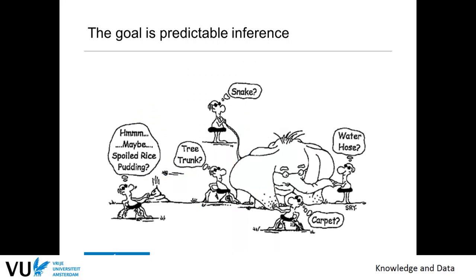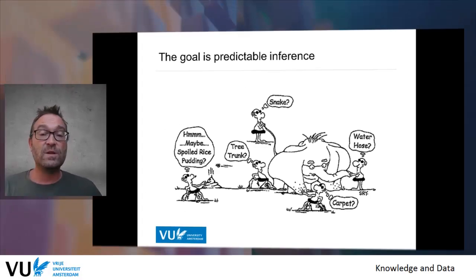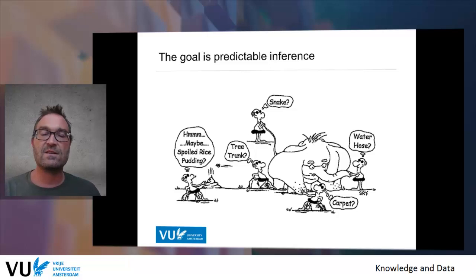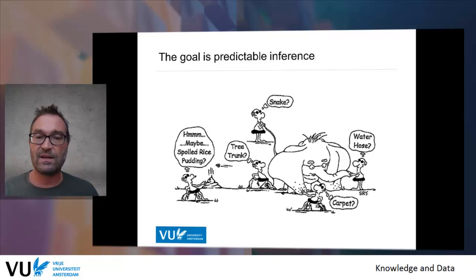The core question of why we need this is that we want to have predictable inference — someone sees a piece of data and knows exactly what it is. At the moment, if you give someone a database, some of them see an elephant, some see a water hose, some see a carpet, some see a trunk. We have to make sure that if you see an elephant in data you know it's an elephant — that this is not a carpet but the ear of an elephant, not a water hose but the tail of the elephant.